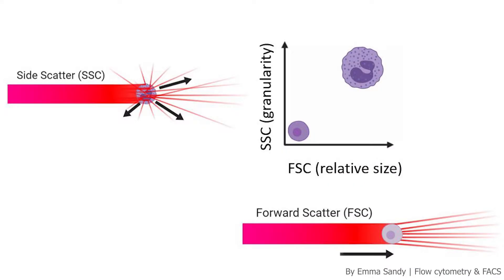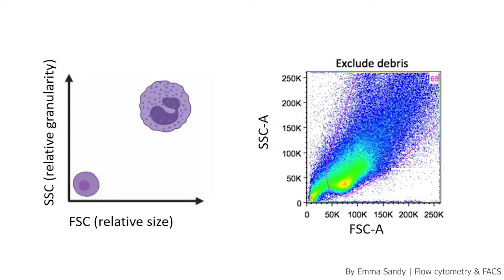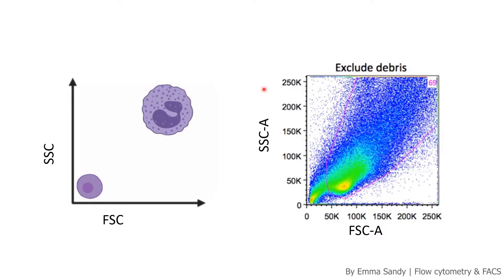The first bit of analysis we do is to just look at the cells. To get a profile of each particle, we look at forward scatter (FSC) and side scatter (SSC) to understand how the light is scattering past that particle. Here is some of my data — these are cells from a lung. FSC is proportional to cell size and SSC is proportional to granularity. This is what the data looks like: one dot per cell.